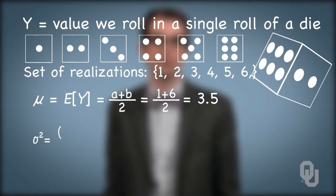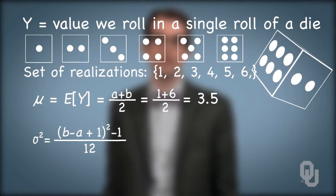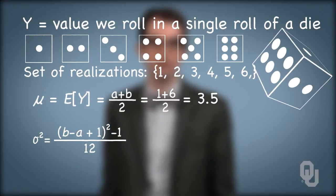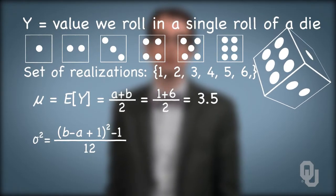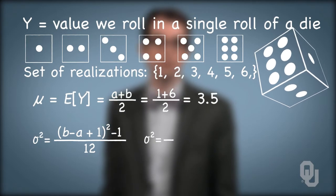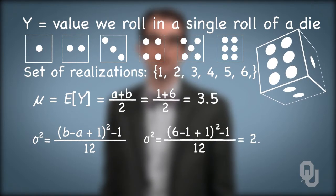The variance of a discrete uniform distribution is b minus a plus one quantity squared minus one all over 12. For the die rolling problem, the variance is 2.917.